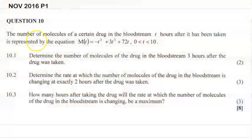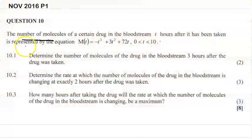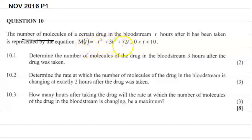It says the number of molecules in a certain drug in the bloodstream, T hours after it has been taken, is represented by the equation m(T) = -T³ + 3T² + 72T, where T is greater than 0 and less than 10.